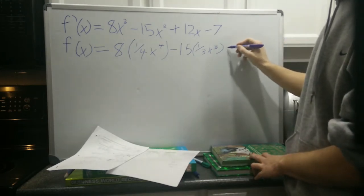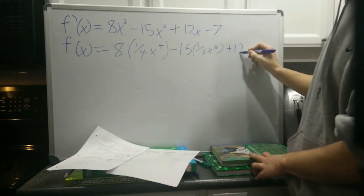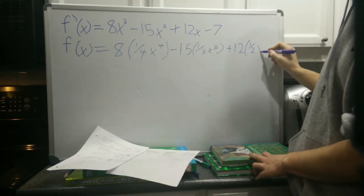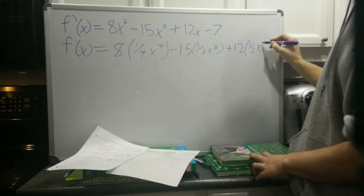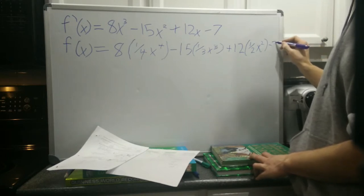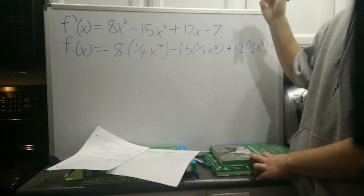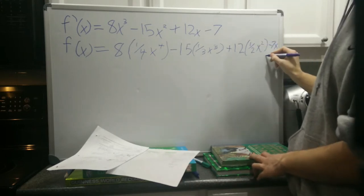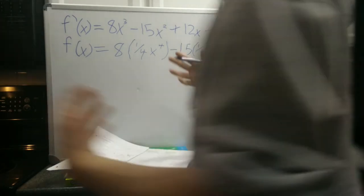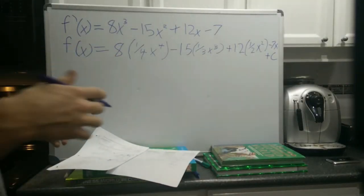12, so then plus 12 times the reciprocal of our new exponent. I'm totally running out of space. Minus 7x, so we add an x to any of the constants. Then we're also going to have plus c for our constant. It kind of went off the edge. I know, terrible for me.